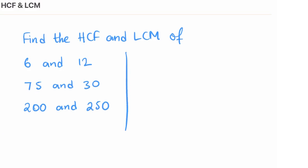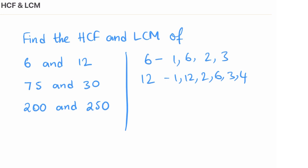Now most of you probably know that you can find the highest common factor by listing the factors of two numbers. So let's have a quick go at the traditional way. You list the factors of 6: one, six, two, and three — I always try to list them in pairs. The factors of 12 are: one and twelve, two and six, and three and four. The common factors are one, two, three, and six, so the highest common factor is six.